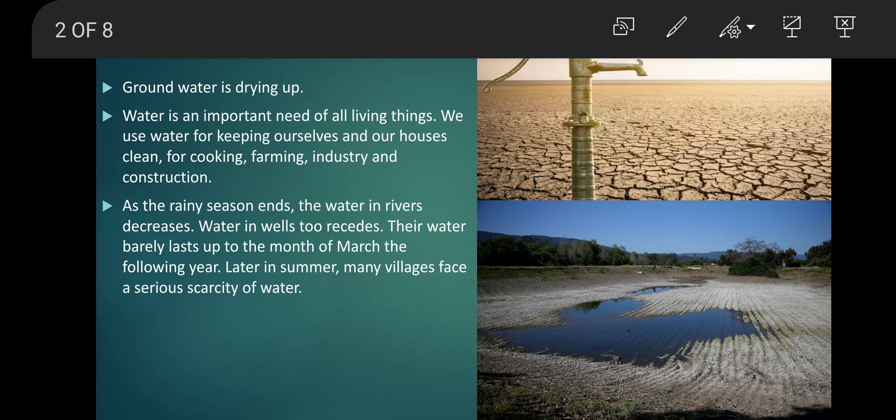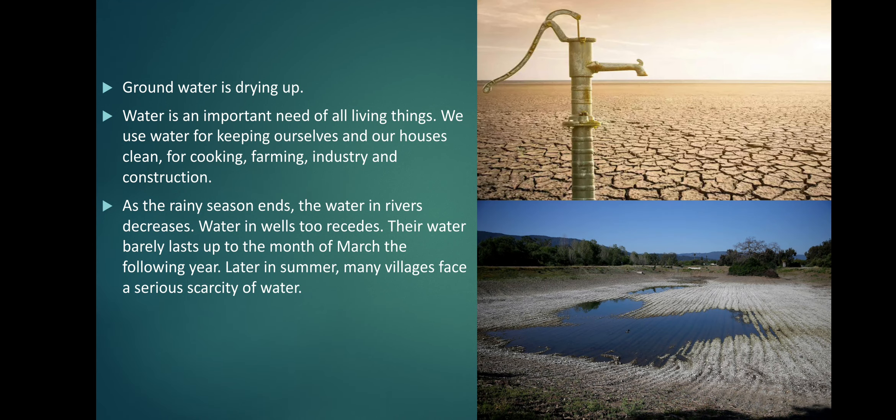In the previous video we learned about the progress made by human beings and the growth of population. In today's topic we are going to learn about growth of population and water, and how ground water is drying up.